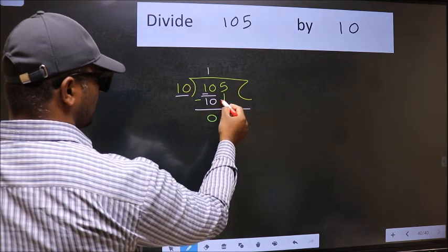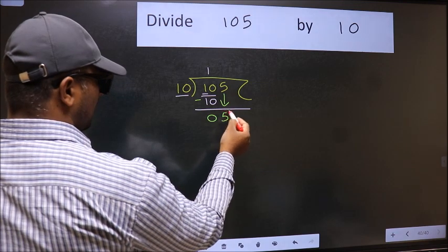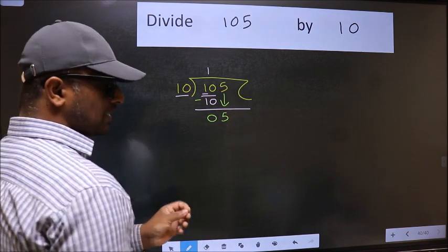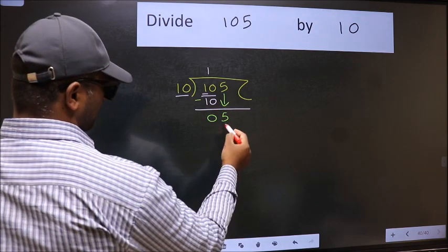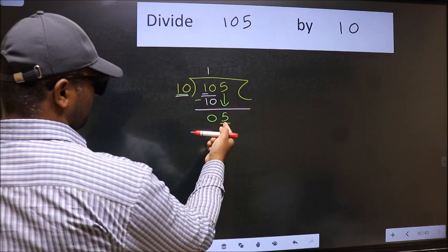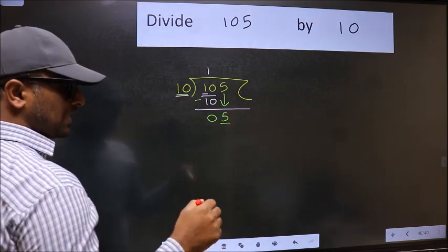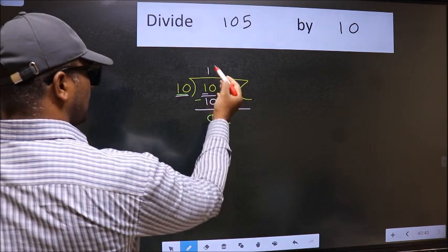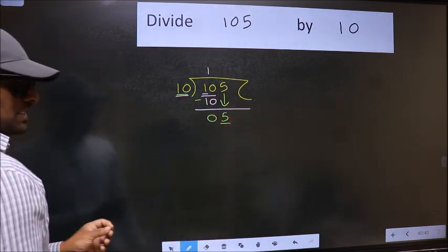After this, bring down the beside number. So 5 down. After this step, the mistake happens. And the mistake is this. Here we have 5 and here 10. 5 is smaller than 10. So what many do is they directly put dot, take 0. Which is wrong.